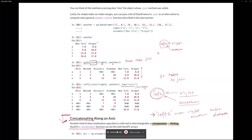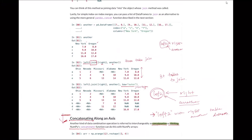Today we're going to continue with Chapter 8, which covers concatenating along an axis — like binding or linking data sets together, such as data frames or series.